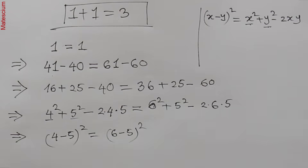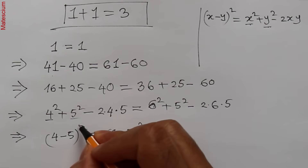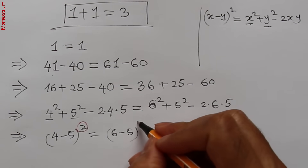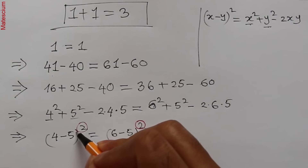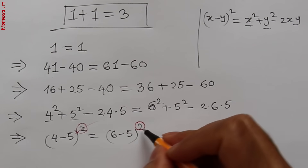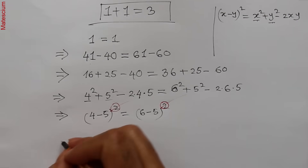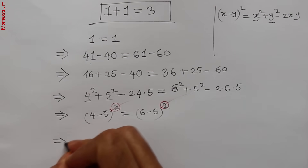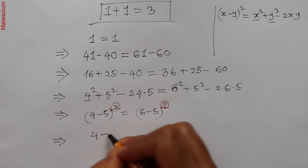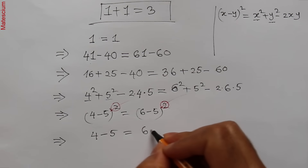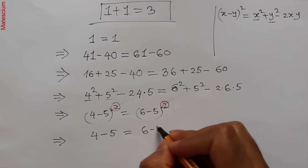Now here is the interesting point of this calculation. On the left hand side we have one square, and on the right hand side another square. Since they are the same, they cancel each other — I can eliminate the squares from both sides. The remaining expression is: left hand side, 4 minus 5, and right hand side, 6 minus 5.